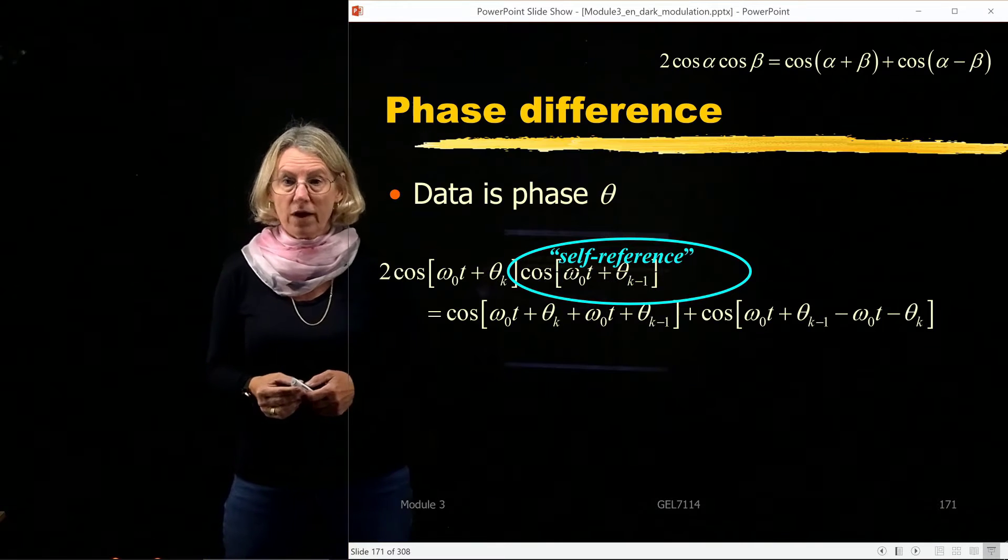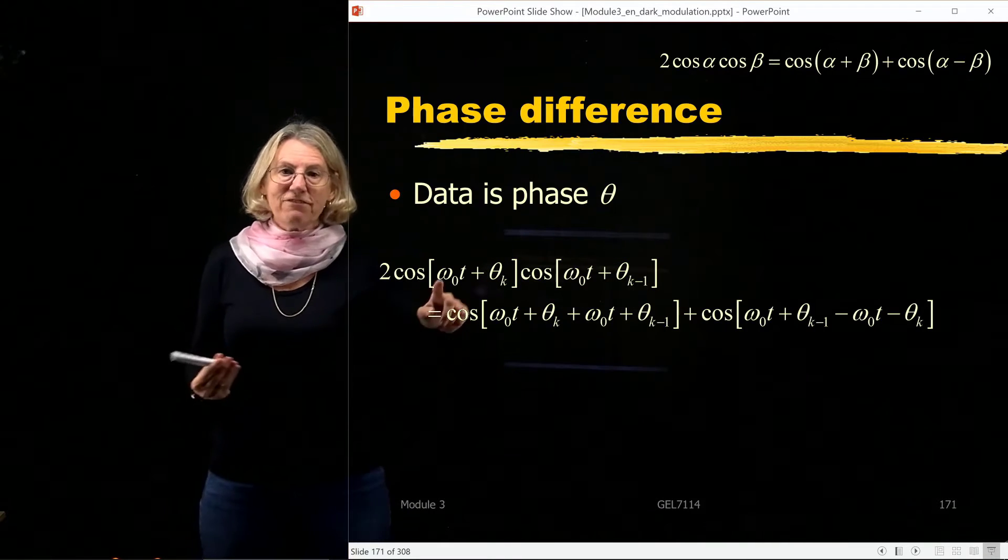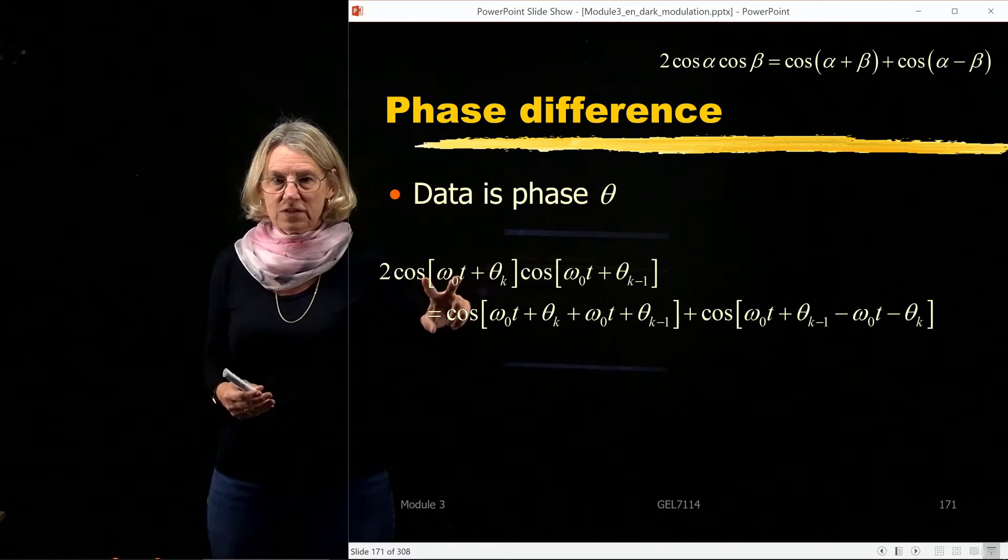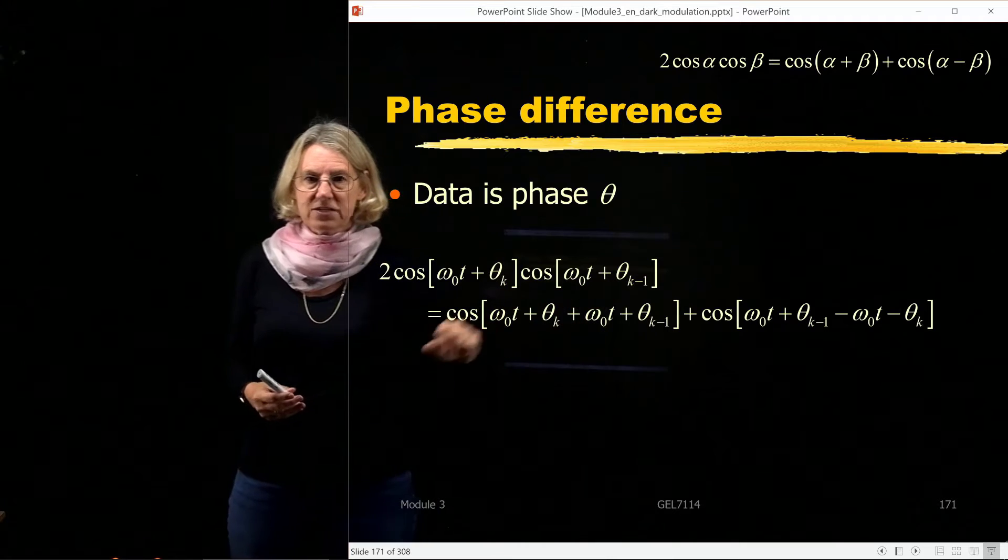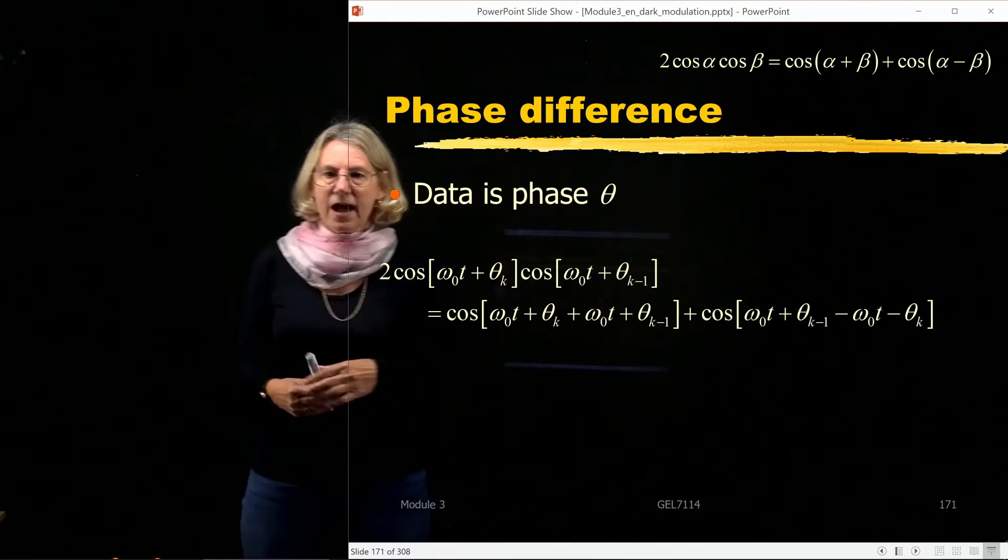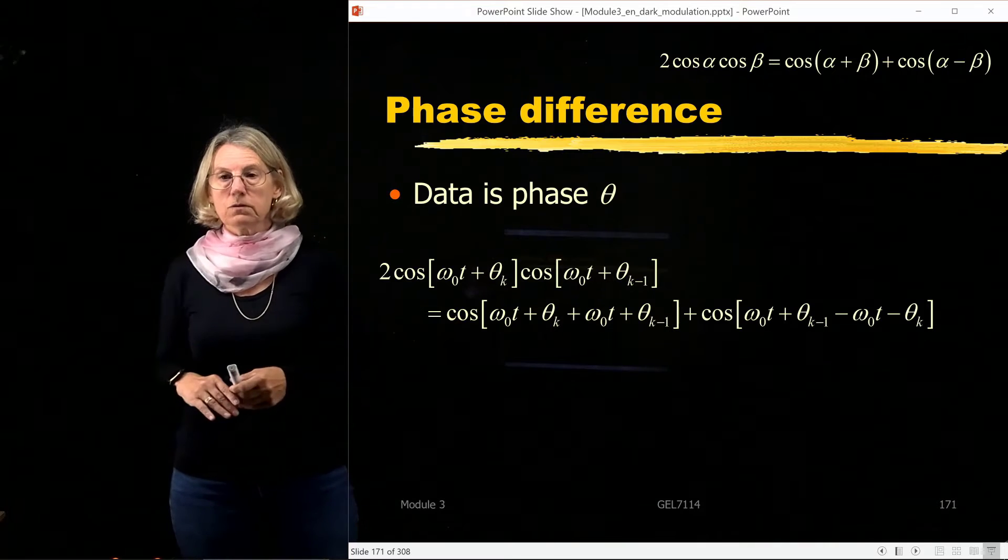So that means what I have here is multiplication, the correlation of the signal at time k with the signal at time k minus 1. So here's the data at time k and here's the data at time k minus 1. The data is coded into the phase.